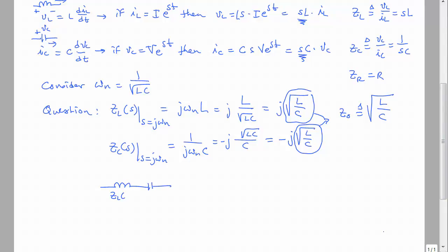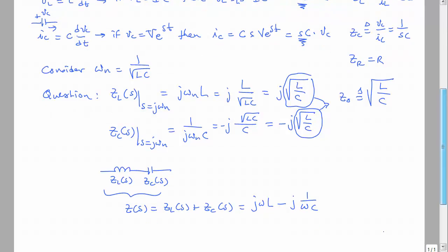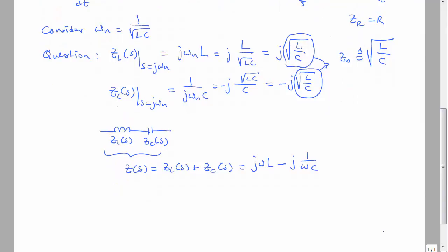When we put an L and a C together in series and consider their effective impedance, it's the sum ZL + ZC, which is J·omega·L minus 1 over omega·C. At the frequency the LC circuit resonates naturally, the impedances of the capacitor and inductor are equal and opposite in sign. Plugging in omega = omega N gives J·sqrt(L/C) minus J·sqrt(L/C), which equals zero.